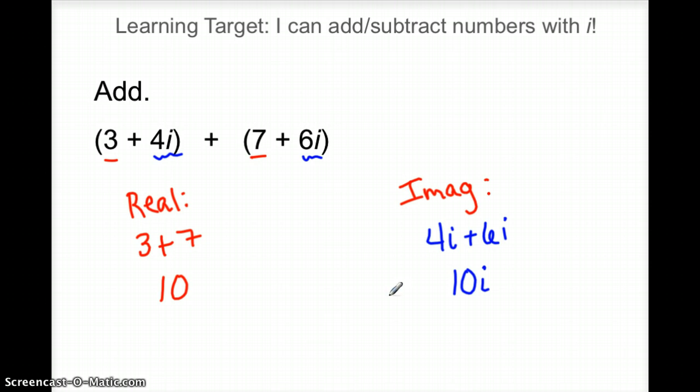So the final answer in complex form, real part comes first, so in the red we got a 10 plus the imaginary part, we got a 10i. So when I add these two complex numbers together in the original problem, they add to the single complex number, 10 plus 10i. So remember, this was the real part, this was the imaginary part.